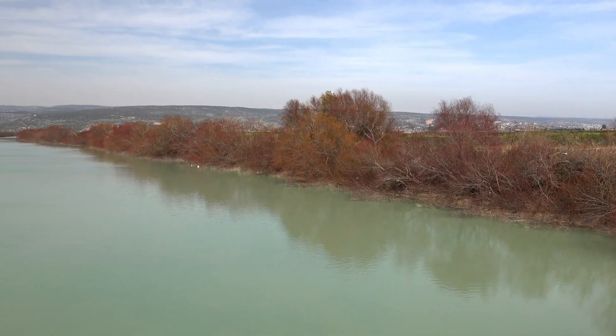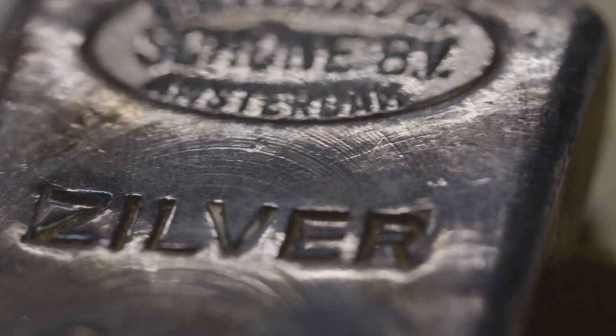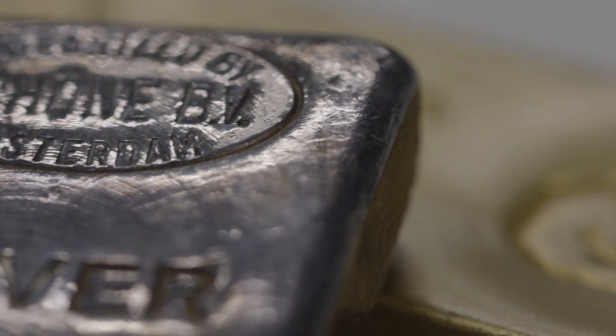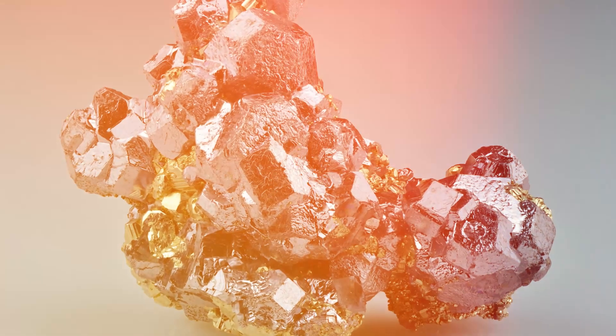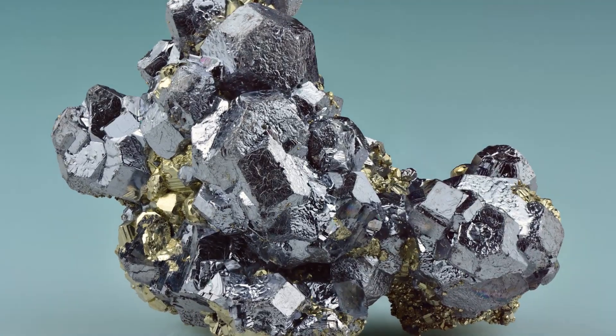But what made lead even more attractive was that it often came with a bonus, silver. Roman miners extracted both metals from a mineral called galena, and even if they were after the silver, they'd end up with lead as a byproduct.